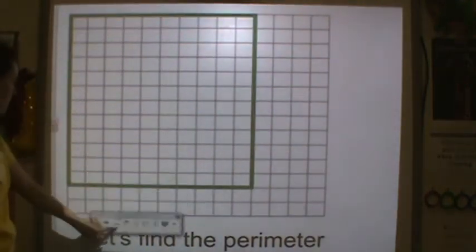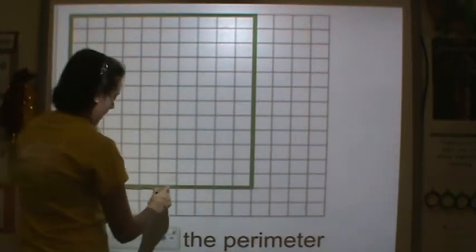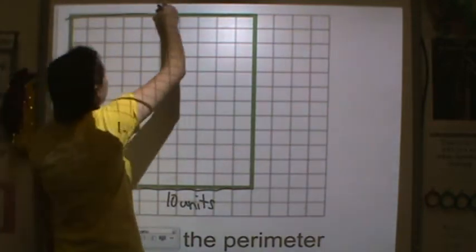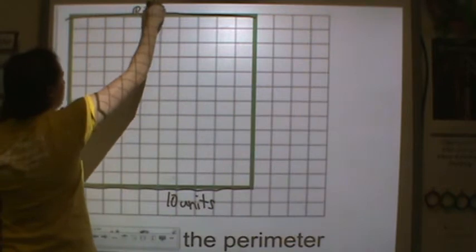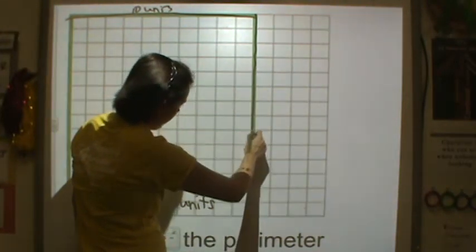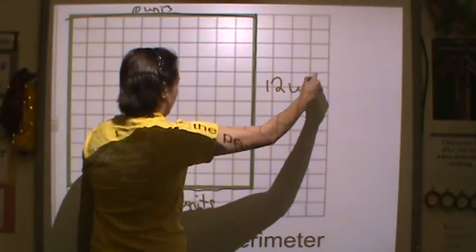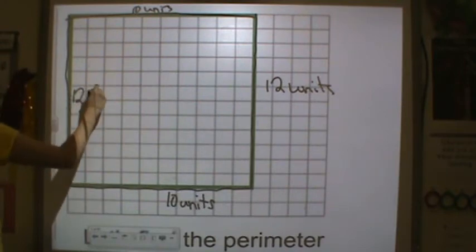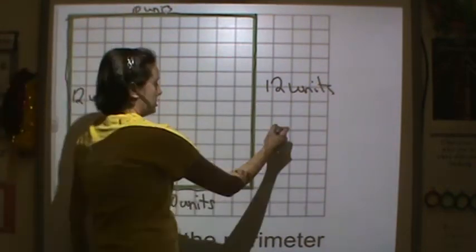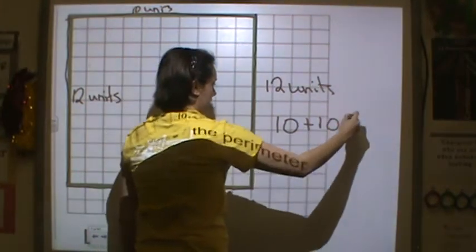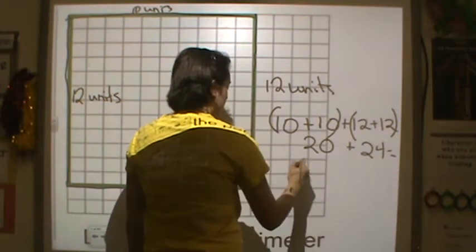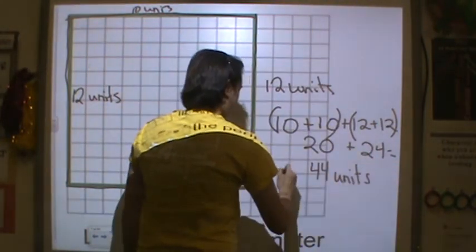Let's try another one — this perimeter is a little bigger. 1, 2, 3, 4, 5, 6, 7, 8, 9, 10 units. And I think you're noticing a pattern because I'm giving you squares and rectangles — the top and the bottom perimeter are the same. And then down the side: 1, 2, 3, 4, 5, 6, 7, 8, 9, 10, 11, 12 units for my width. So I have 12 units on both sides. 10 and 10 is 20, 12 and 12 is 24, so 10 plus 10 plus 12 plus 12, or 20 plus 24, is equal to 44 units for the perimeter.